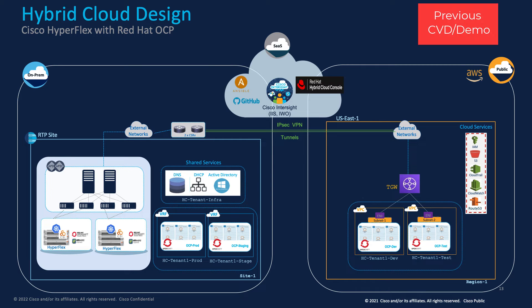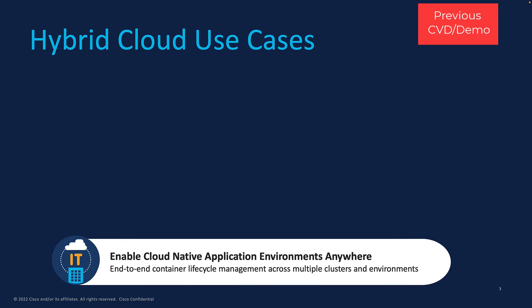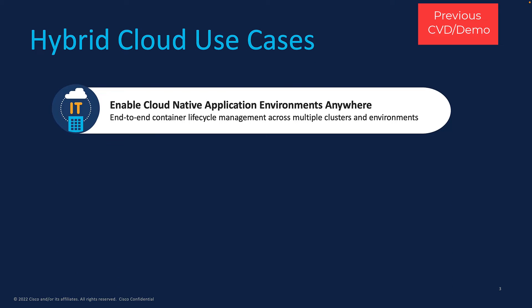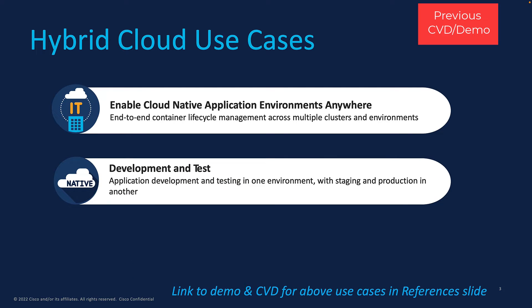This solution builds on a previous Cisco-validated design which delivered an enterprise-class hybrid cloud solution for hosting cloud-native workloads. The earlier solution addressed two use cases: enabling cloud-native environments anywhere from on-prem to public cloud with consistent operational and development experience, and the dev-test use case, where an organization may start their development work in the cloud but then bring the application on-prem for staging and production. To support this, enterprises need multiple Kubernetes environments for the multiple teams that support the build-release cycle for a cloud-native application.